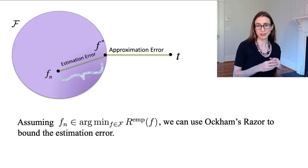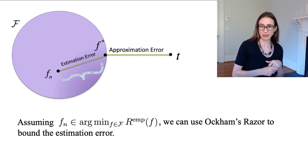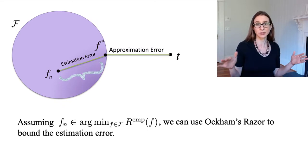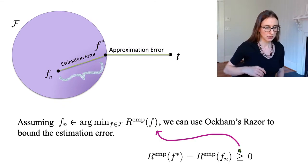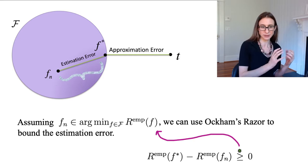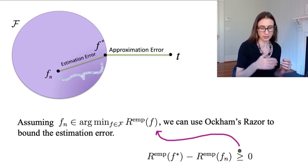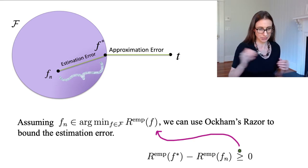And so here the Occam's razor bound can come and help us out to bound that estimation error. Now because Fn is the minimizer of the empirical risk, that means it has the lowest empirical risk, and even F star's empirical risk is higher than that. In other words, the empirical risk of F star is bigger than the empirical risk of Fn because it is the minimizer.